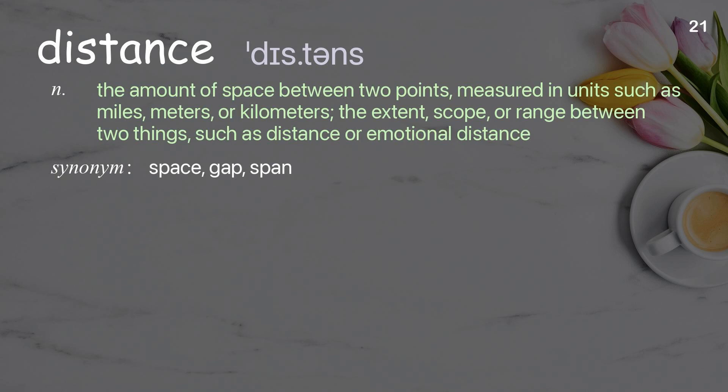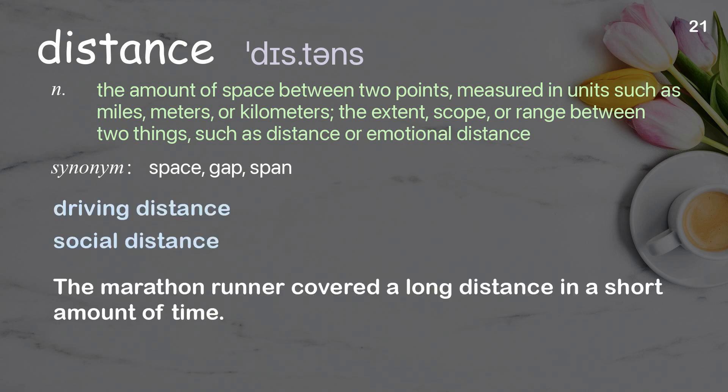Distance: the amount of space between two points, measured in units such as miles, meters, or kilometers; the extent, scope, or range between two things, such as physical distance or emotional distance. Examples: driving distance, social distance. The marathon runner covered a long distance in a short amount of time.